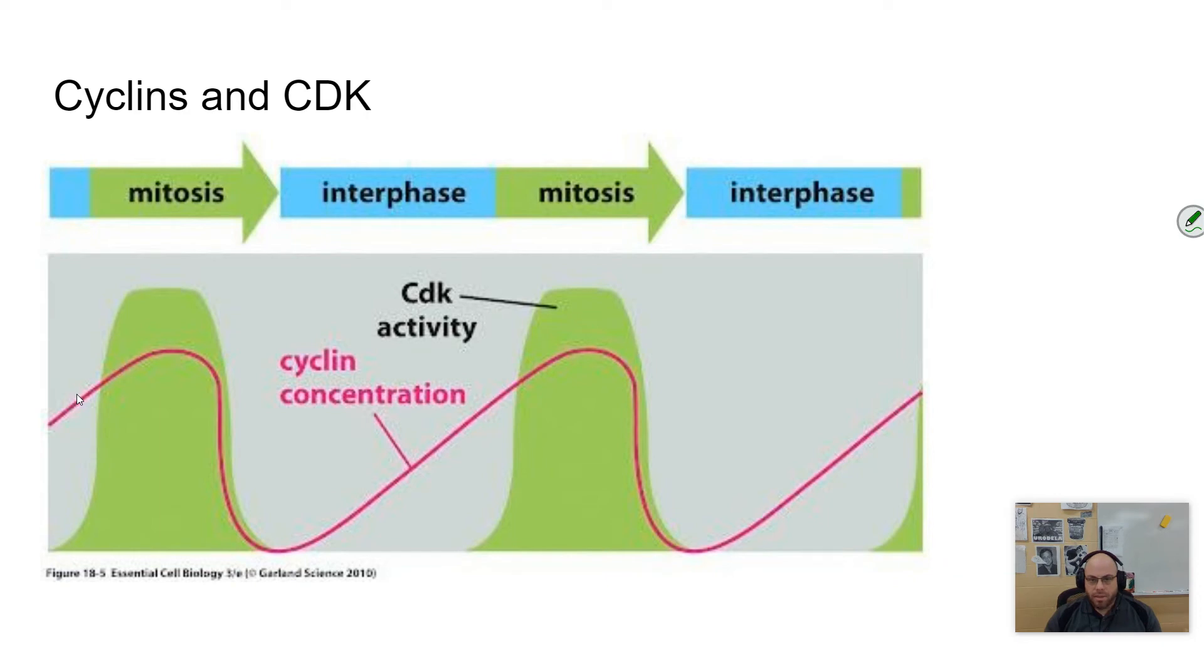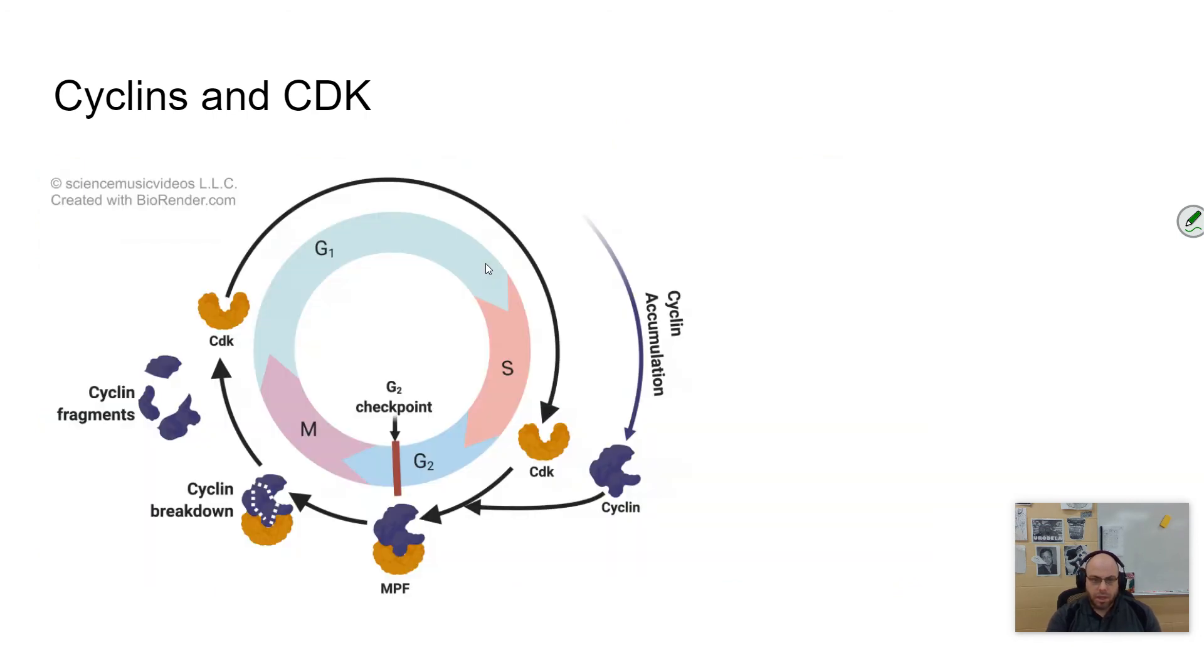As the concentration of cyclin increases in the cell, CDK activity will be higher because they join together. As cyclin goes away, CDK activity goes down with it. You can see these regular ebbs and flows control whether or not the cell is dividing. It's like a clock—once the clock gets to a certain point, the cell will initiate cell division.